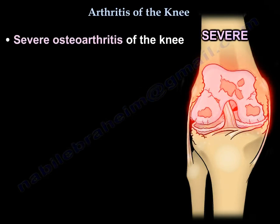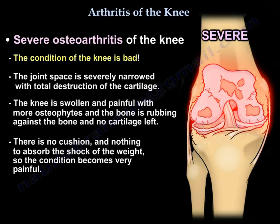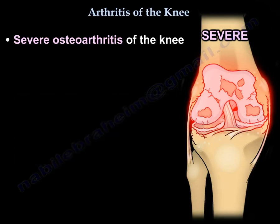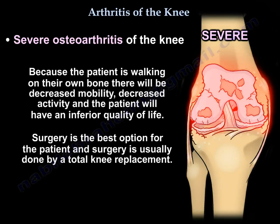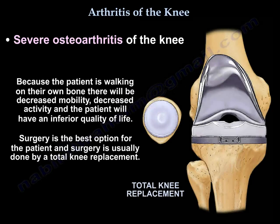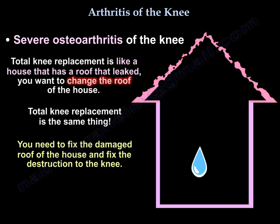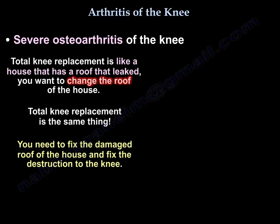The last stage is severe osteoarthritis. The condition of the knee is bad. The joint space is severely narrowed with total destruction of the cartilage. The knee is swollen and painful with more osteophytes, and bone rubs against bone. No cartilage is left — there is no cushion, nothing to absorb the shock of the weight. So the condition becomes very painful. Because the patient is walking on bare bone, there will be decreased mobility, decreased activity, and inferior quality of life. Surgery is the best option, and surgery is usually a total knee replacement. Like a house with a completely destroyed roof — you want to change the roof of the house, and that is a total knee replacement.